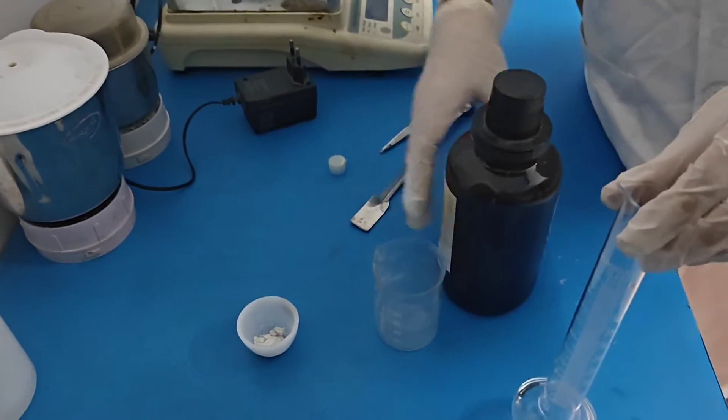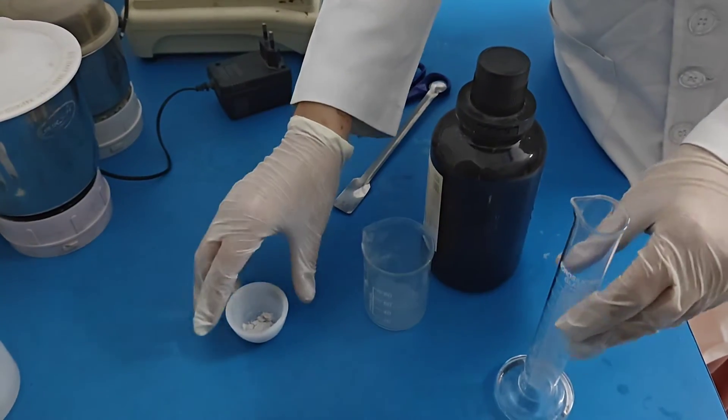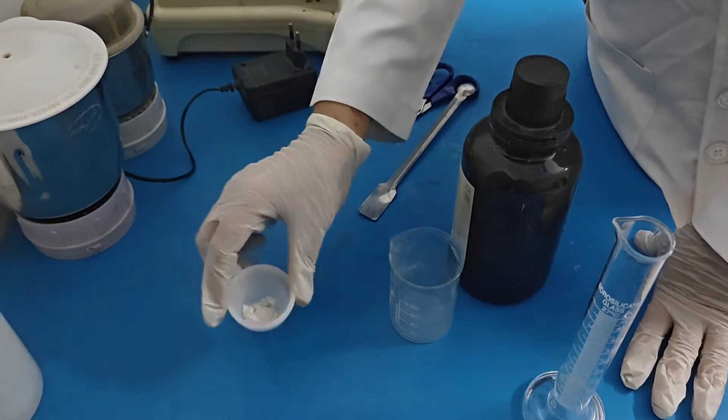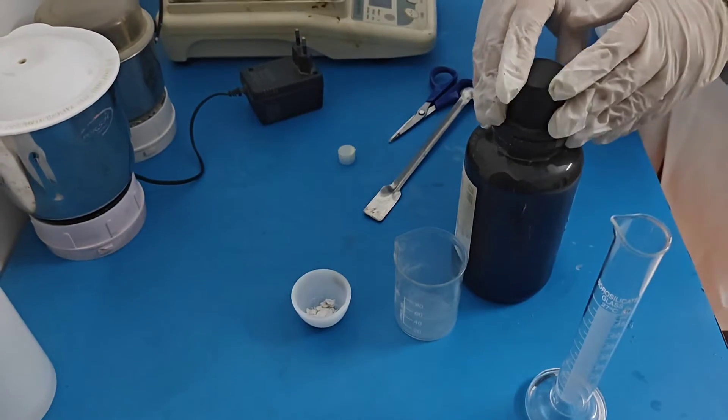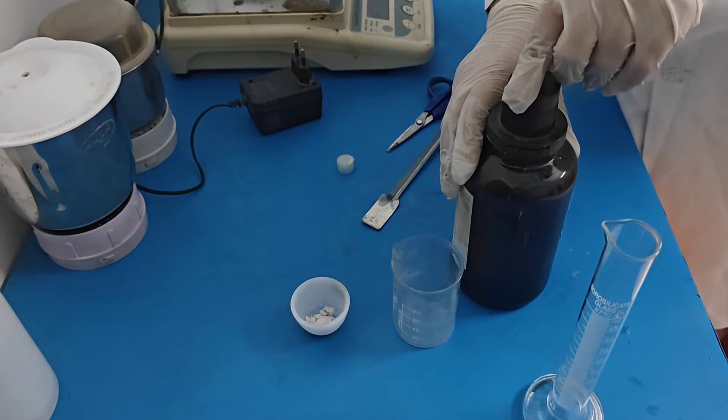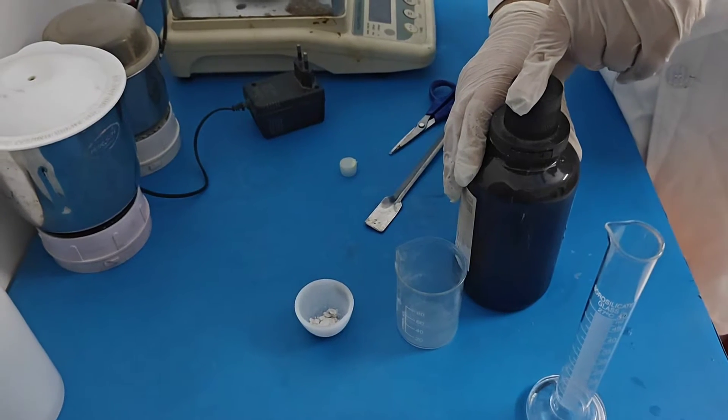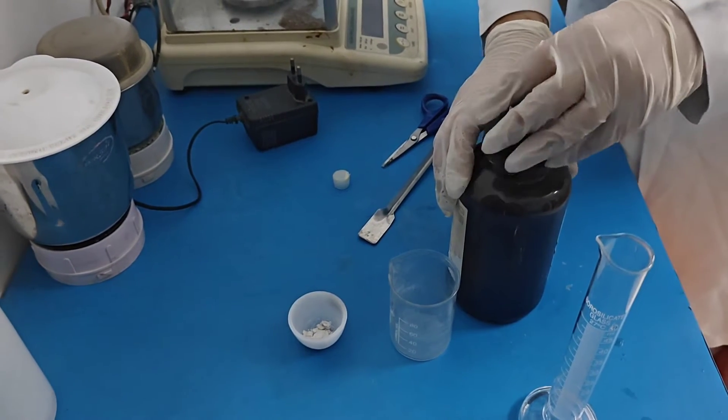25 ml of HCl is used to dissolve the ash. After that we have to keep the solution inside the water bath at 110 degrees Celsius for 10 minutes.